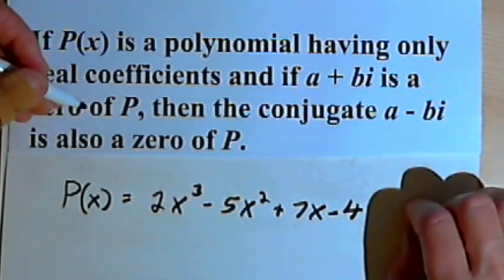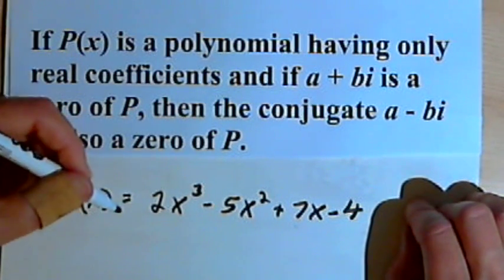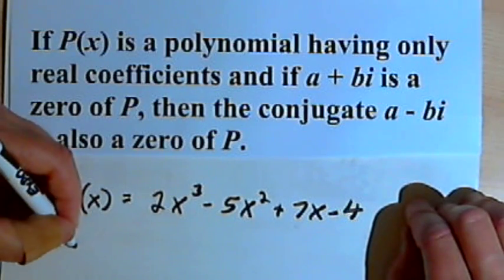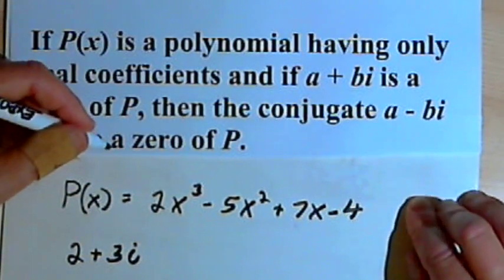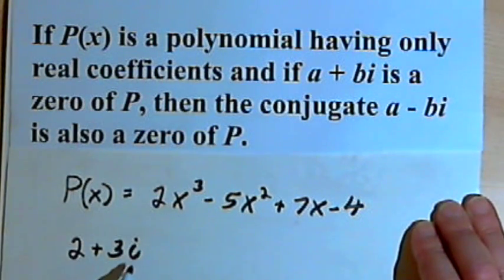And you're told that one of the zeros of this polynomial is 2 plus 3i. In other words, one of the zeros is a complex number.